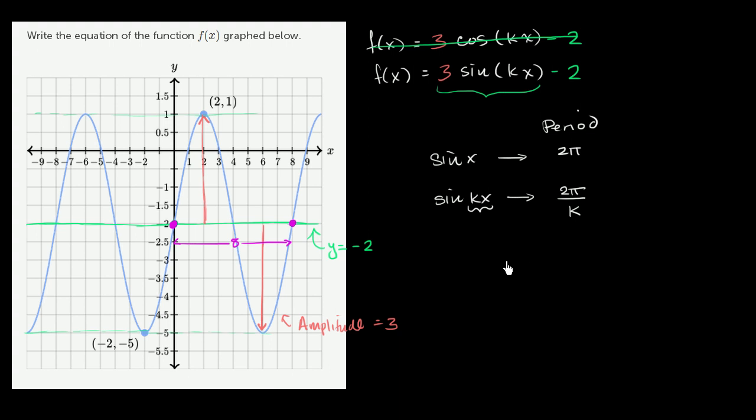So let's think about it this way. Now, so if we wanted to say 2π over k is equal to 8. So if 2π over k is equal to 8, well, what is our k?